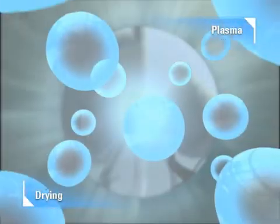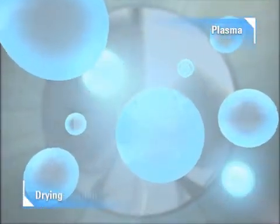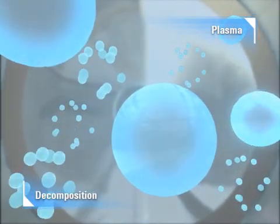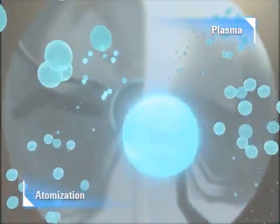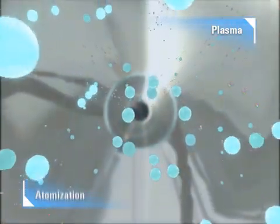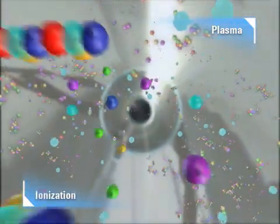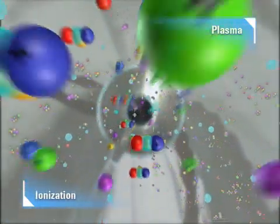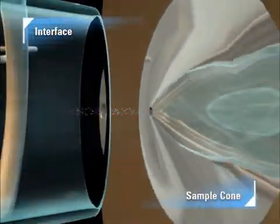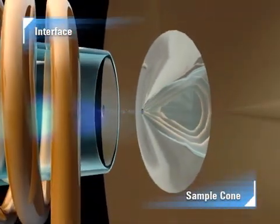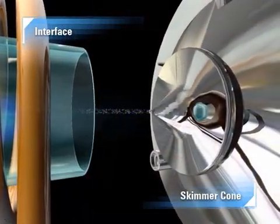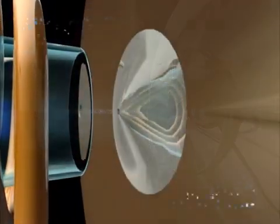As they travel through the high-temperature argon plasma, the aerosol droplets are dried, decomposed, atomized, and finally ionized, producing a rich source of positively charged ions. The ions are extracted from the plasma into the interface through the sampling orifice, and then through the skimmer cone into the high-vacuum region containing the ion lenses and mass analyzer.